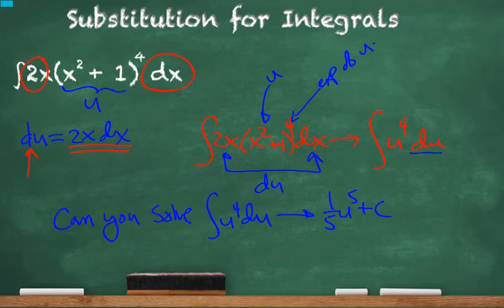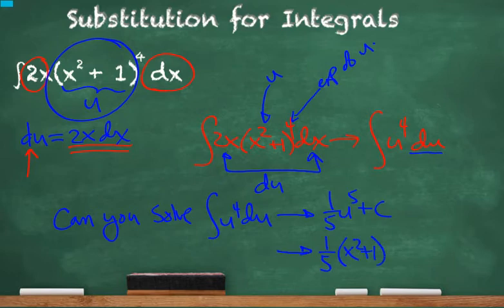But, just like our algebra example with factoring, was this question asked using the u variable? No. So, we have to replace u with what it is equal to. And we see that u is equal to x squared plus 1. So, our final step is 1/5th x squared plus 1 in parentheses to the 5th power plus c.